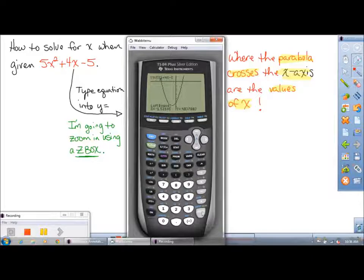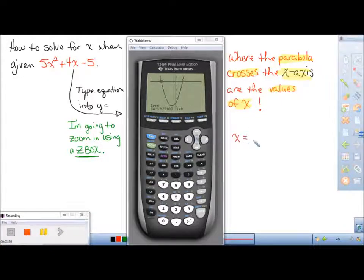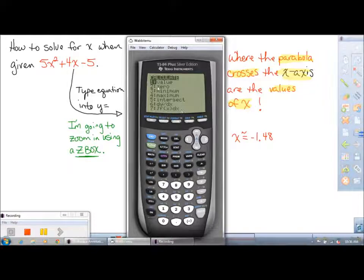It's asking you to get to the left bound. So I get above it, get to the right bound below, and take a guess where you think it's at. We get an answer of about negative 1.48. So where y is 0, x is negative 1.48.